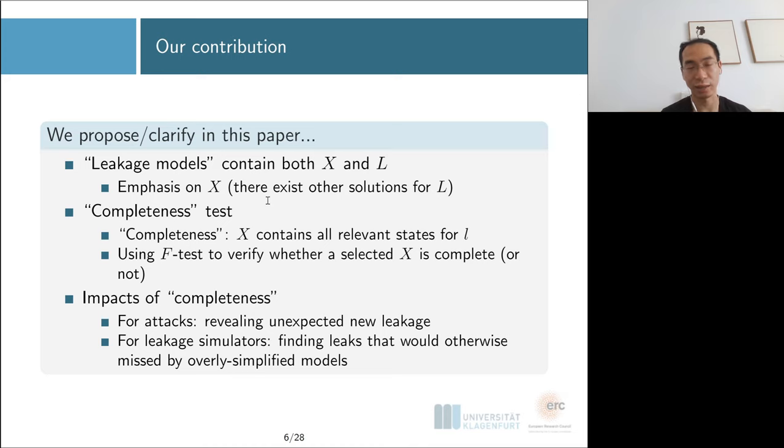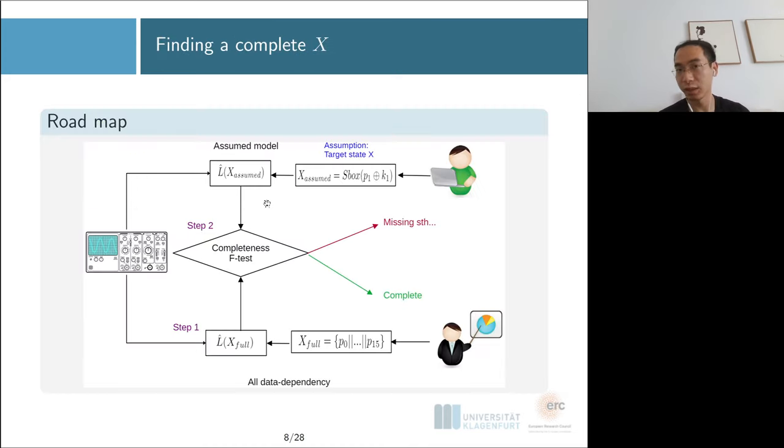Let's start our journey to see how we can find the complete set of intermediate states. First, we need to construct a full model that captures all the data-dependent leakage. With this full model, we're going to estimate this model from the realistic trace. From the attacker's assumption, we hope the leakage is solely about the S-box output.